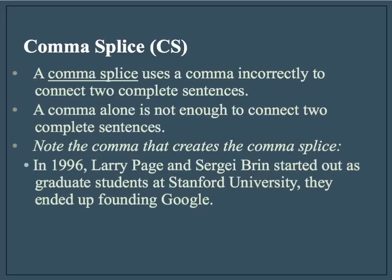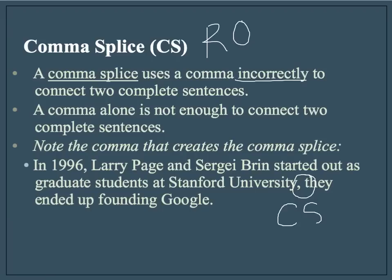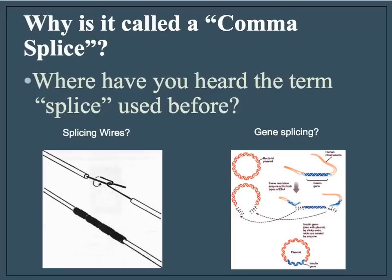Now let's talk about the comma splice, which is the other type of run-on sentence. A comma splice uses a comma incorrectly to connect two complete sentences. A comma alone is not enough to connect two complete sentences. Notice the comma that creates the comma splice here. Same sentence: In 1996, Larry Page and Sergey Brin started out as graduate students at Stanford University, they ended up founding Google. Notice the only difference is now a comma has been added, but it is still not a correct sentence. In fact, a fused sentence has just been changed into a comma splice — another major error — by the addition of the comma between two complete sentences.